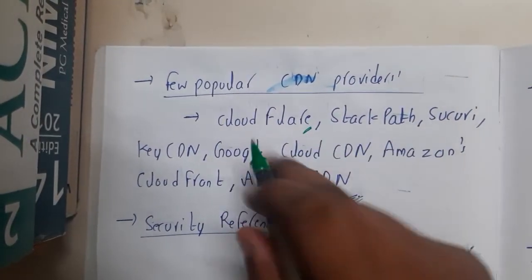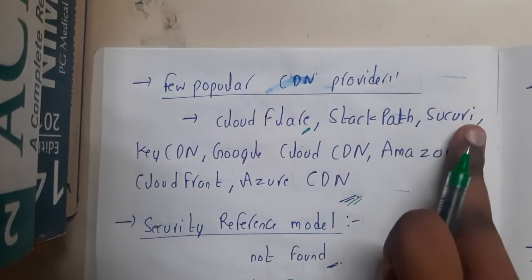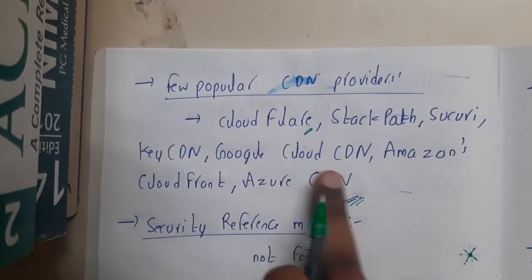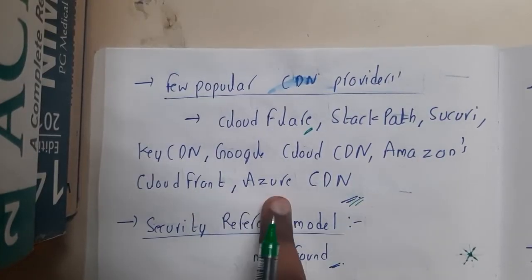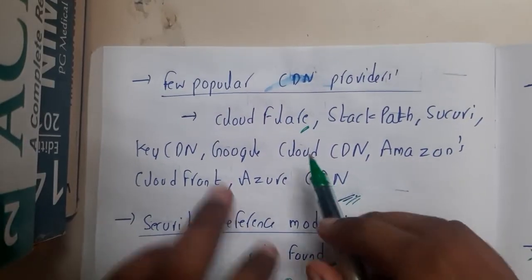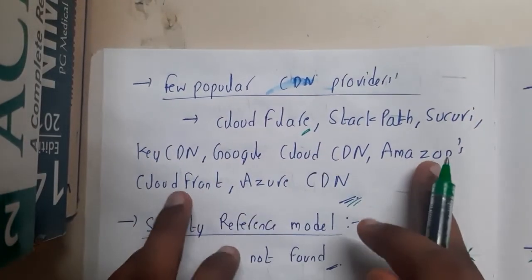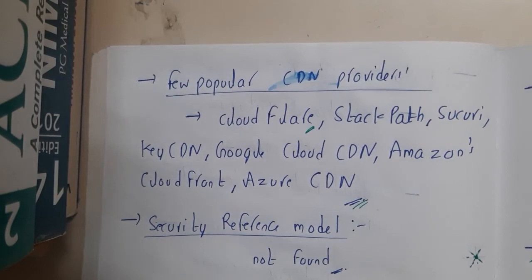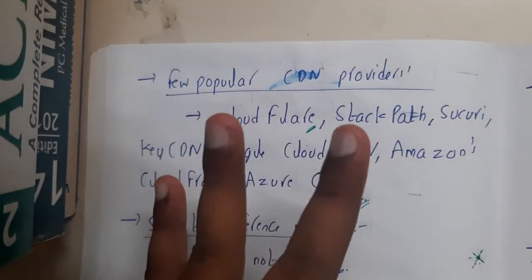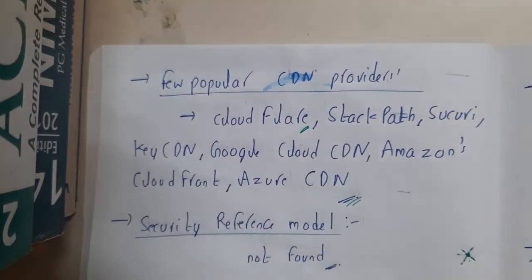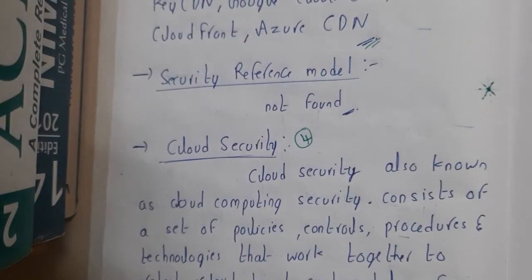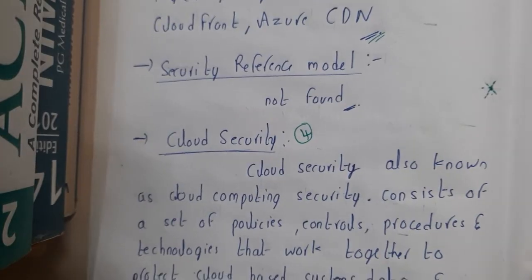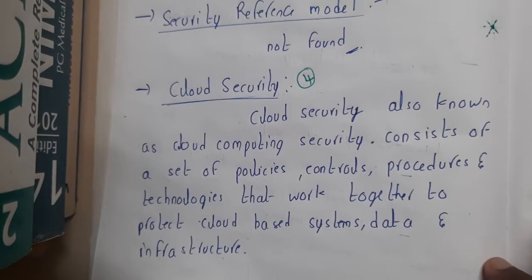These are some popular CDNs: Cloudflare, which I personally use; StackPath; KeyCDN; Google Cloud CDN; Amazon CloudFront; and Azure CDN — from Google, Amazon, and Microsoft respectively. I hope everyone got a clear idea about CDN, its advantages, disadvantages, and a few popular ones. In the next lecture, we'll be discussing about cloud security. Thank you for watching.